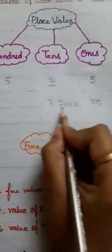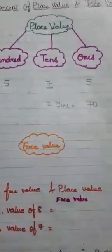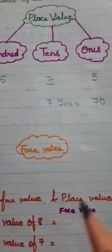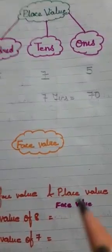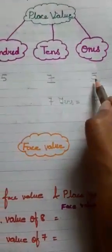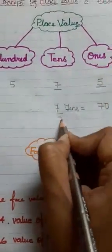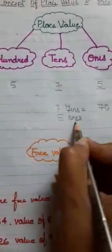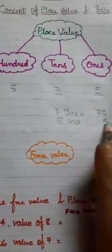Now again, if I ask you the place value of five — five is in which place? Five is in the ones place. It means five ones equal to five.